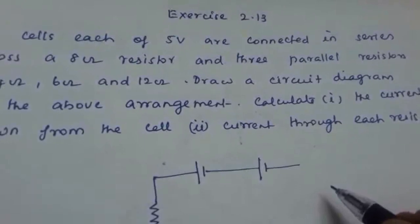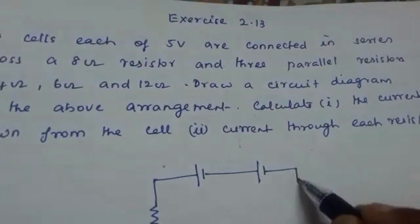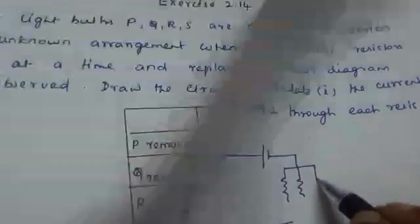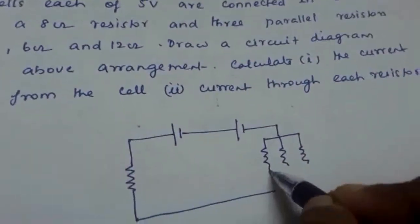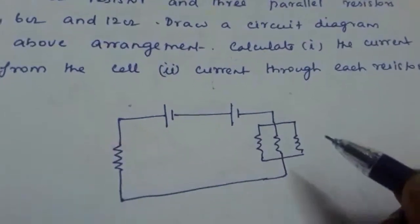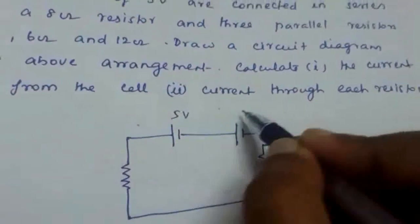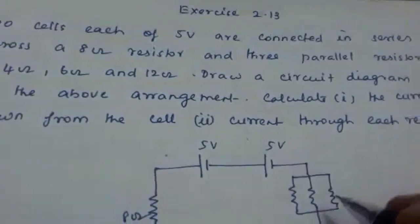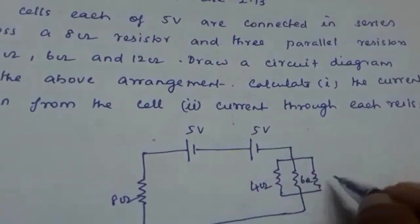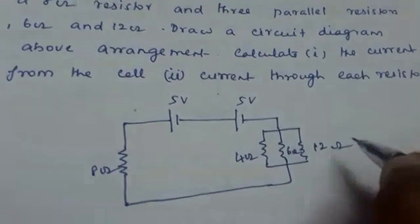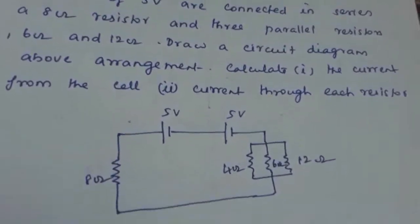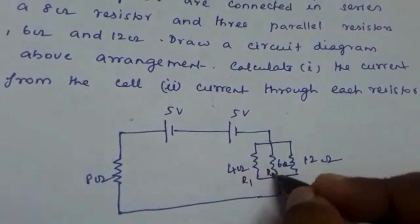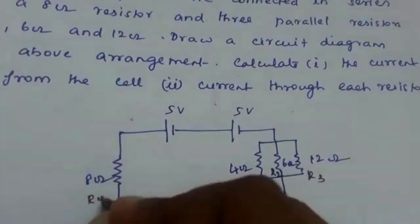Three parallel resistors are also in series with this arrangement. So first we draw the 3 parallel resistors — 1, 2, 3 — all three in parallel. This is 5 volt, this is 5 volt, this is 8 ohm. According to the question, the parallel resistors are 4 ohm, 6 ohm, and 12 ohm. We name them R1, R2, R3, and R4.